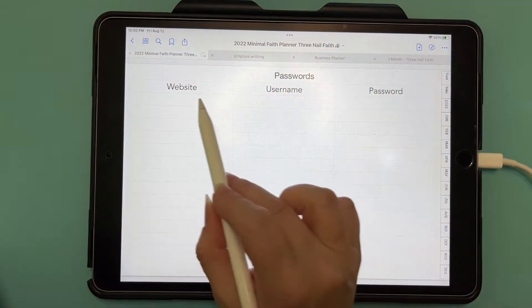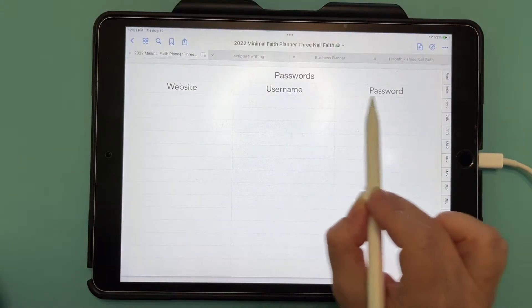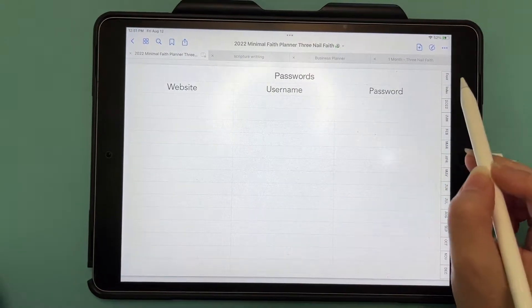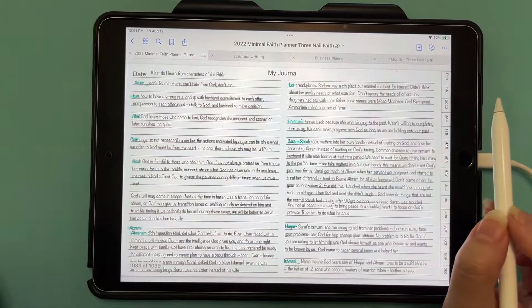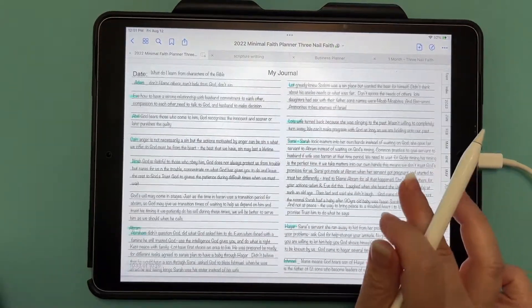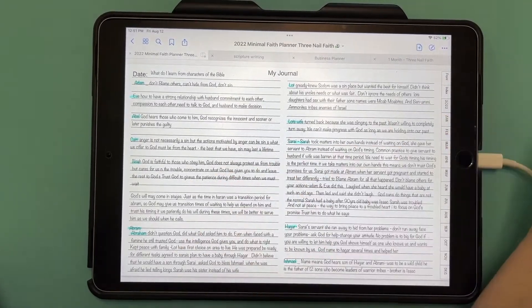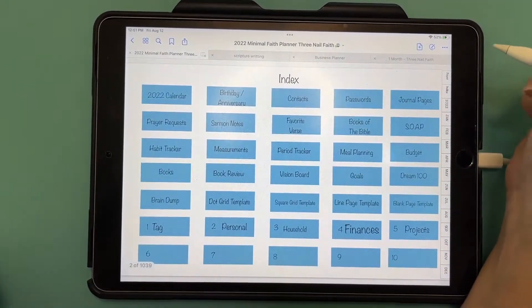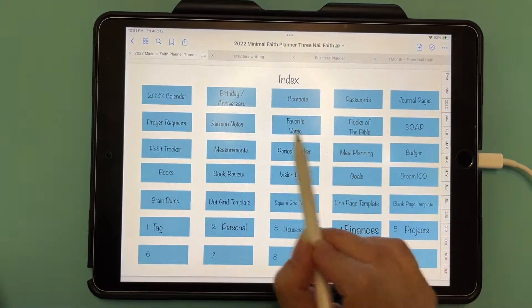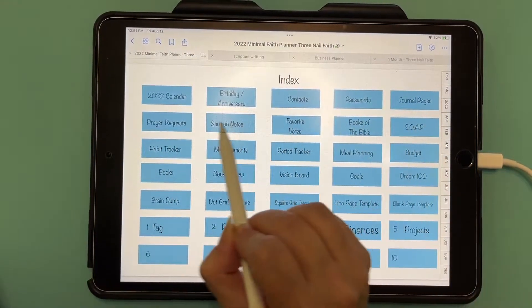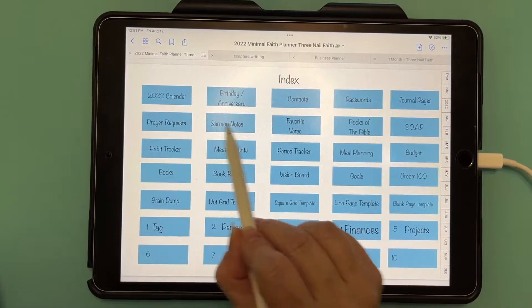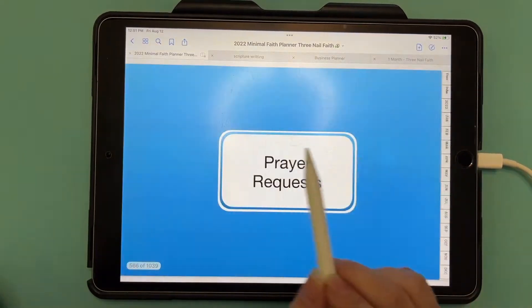Let's go back to the index. We did contacts, passwords. This would be for the website, your username and password. Then we have journaling pages. I personally used this when I was studying part of the New Testament or the Old Testament. So you can use it for anything. We went over all of the sermon pages or all of the Christian pages in another one, but I will quickly go over them.